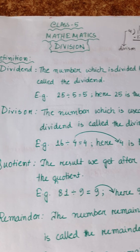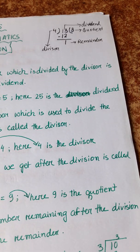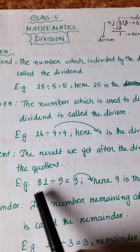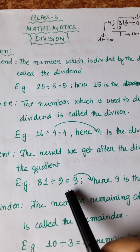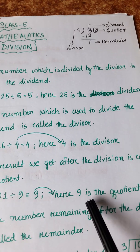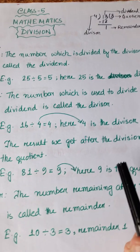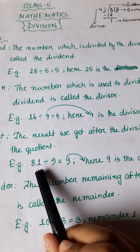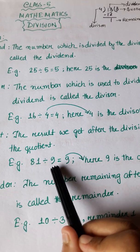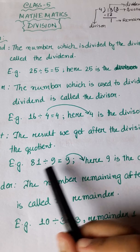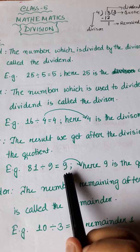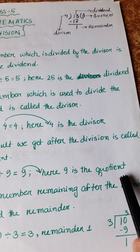Number 3: Quotient. The result we get after the division is called the quotient. The result we get after dividing is called the quotient. Example: 81 divided by 9 is equal to 9. Here 9 is the quotient. 81 is the dividend, 9 is the divisor, and the result 9 is the quotient.